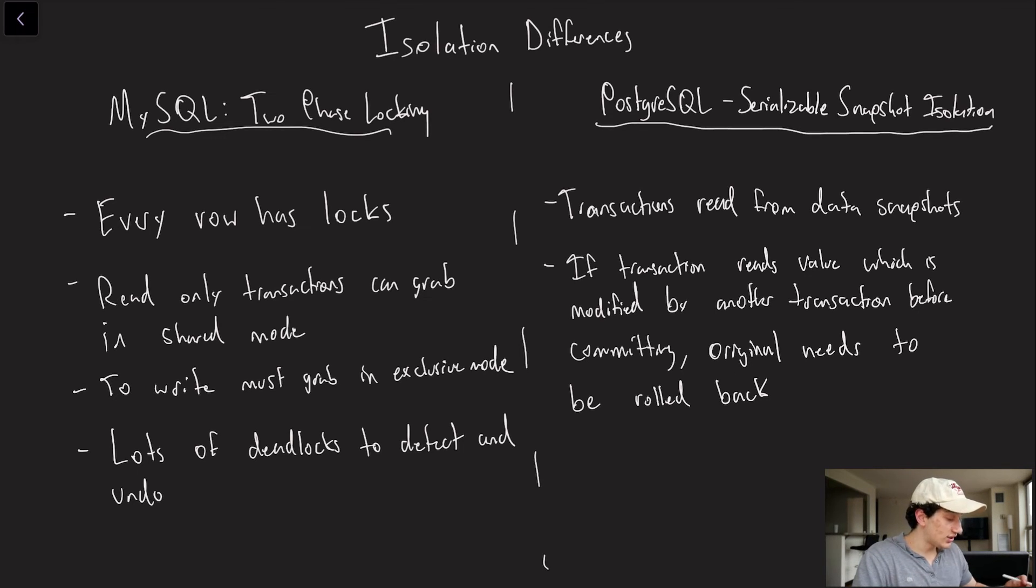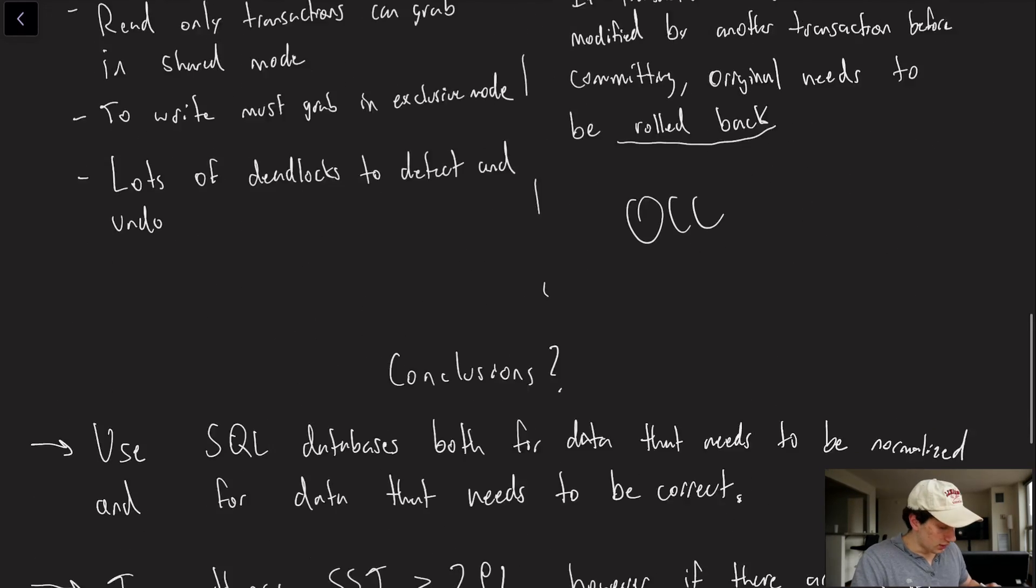On the other hand, Postgres uses serializable snapshot isolation, which is a bit newer of a technology. I should also mention that I think MySQL is starting to get into this as well, but again, these feature sets change all the time. If you're watching this video in a year from now, who knows how true any of this will be? So that's why I make these sweeping generalizations, which could be wrong, but either way, it serves as a good case study for our point. So Postgres uses SSI, which I have a dedicated video on this if you need more information on it, but the overall summary is that transactions will read from a data snapshot, and of course, if a transaction reads a value from a given snapshot, that by the time it's trying to commit has since been modified by a second transaction, we need to roll back the original. And so there are going to be some transactions that get rolled back, but this is ultimately a form of OCC, which is Optimistic Concurrency Control, because we're not locking assuming that everything can go wrong. We're acting as if nothing can go wrong, and then when it does, we roll back.